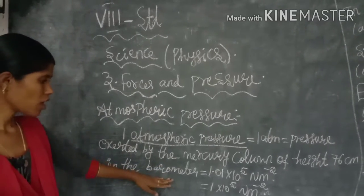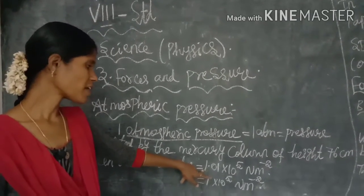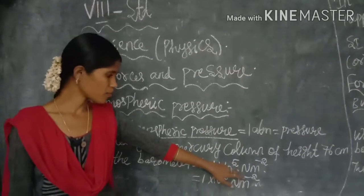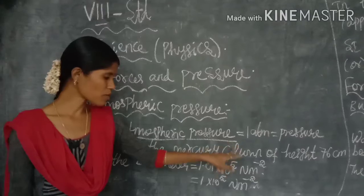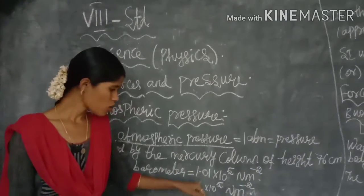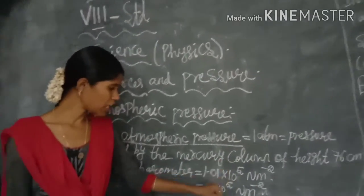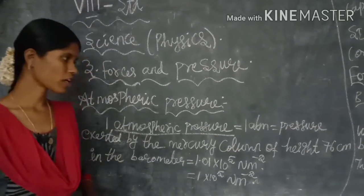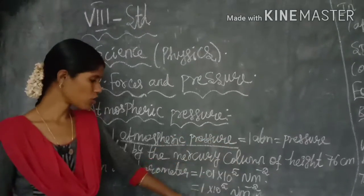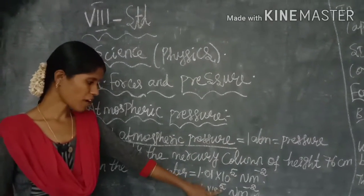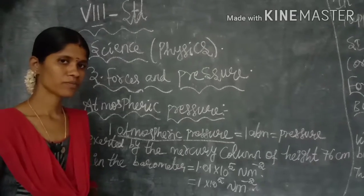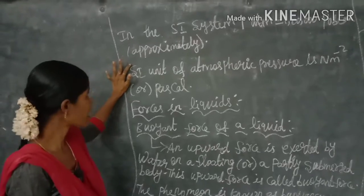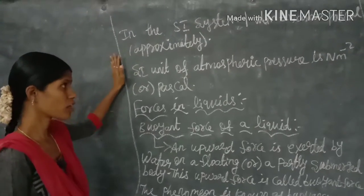In terms of value, one atmospheric pressure is equal to 1.01 × 10⁵ newton per meter squared, since the SI unit of atmospheric pressure is newton meter⁻². Rounding this value, we get 1 × 10⁵ N/m². In the SI system, one atmospheric pressure is equal to 1 lakh pascal.